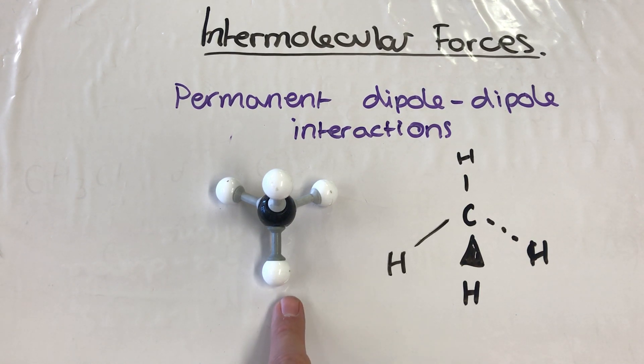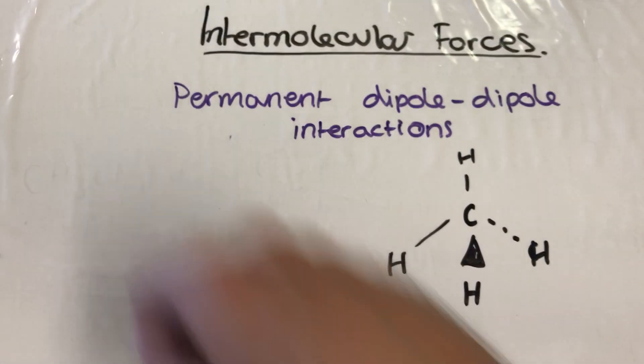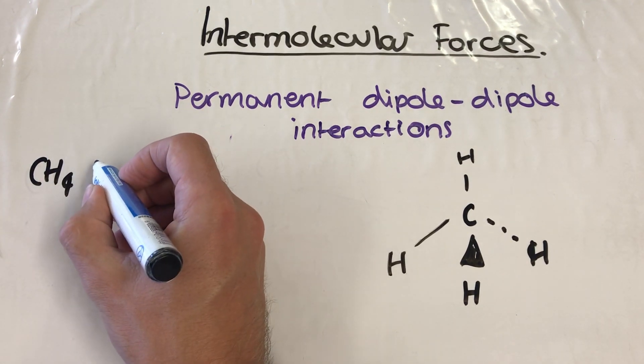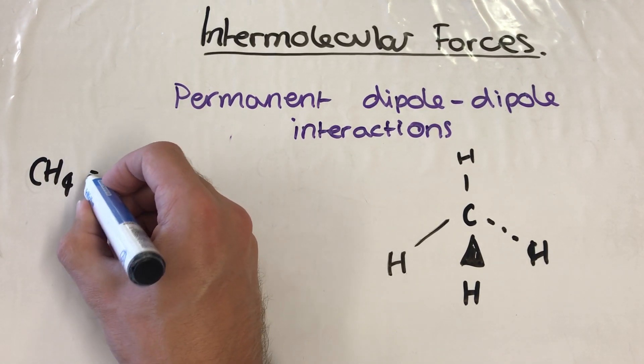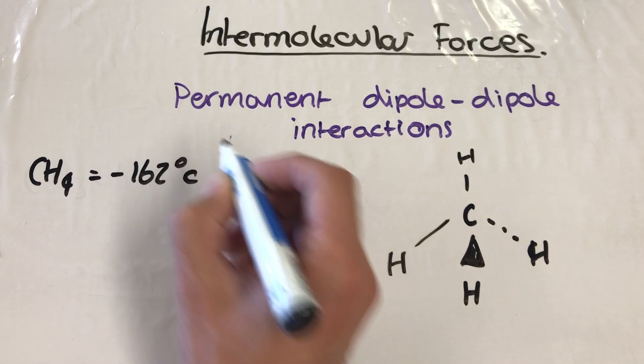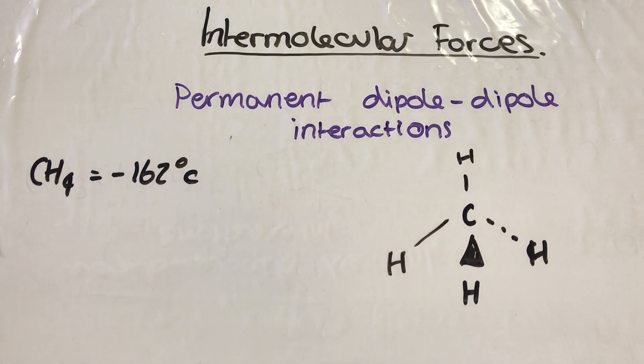Now I've started with that because it's quite important, because we can start looking at comparing its boiling point to molecules which do have permanent dipole-dipole interactions. Now I'll leave it here. So the methane, CH4, its boiling point is minus 162 degrees Celsius. So it's an incredibly low boiling point for methane.